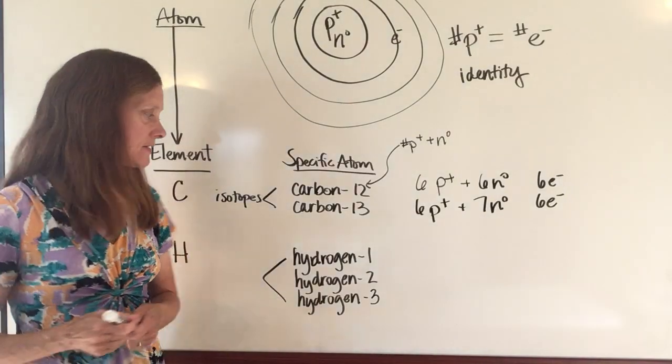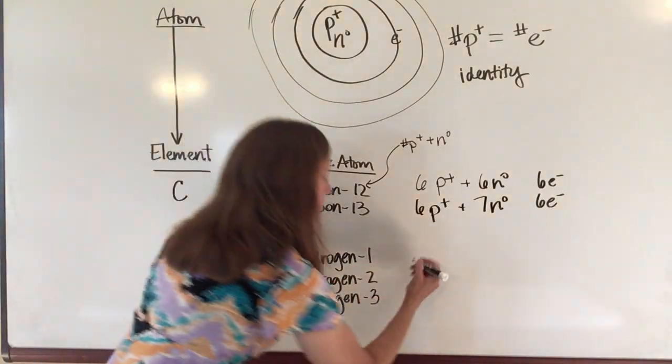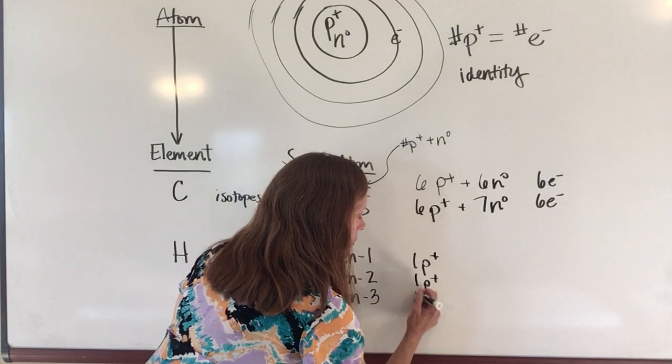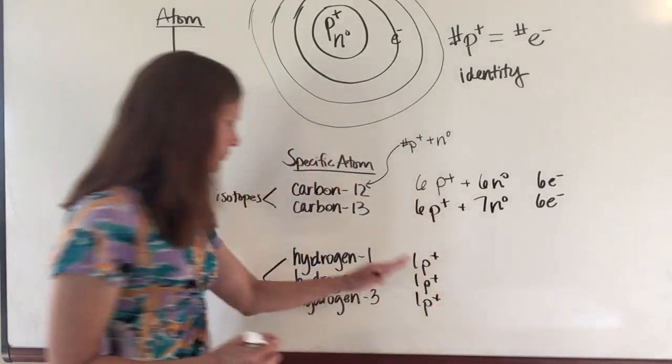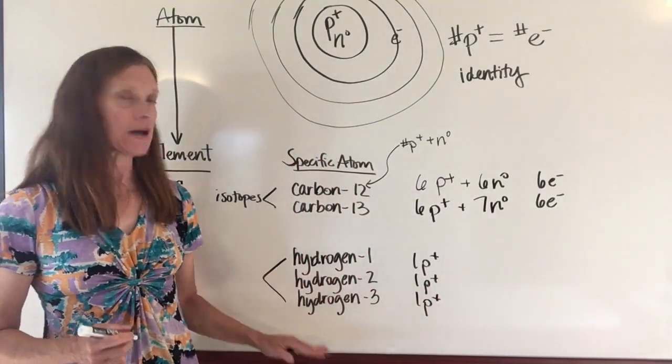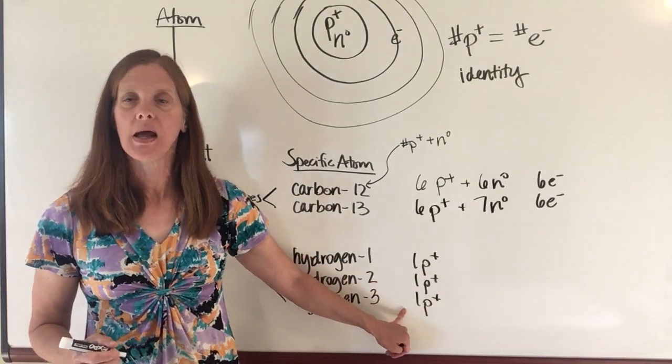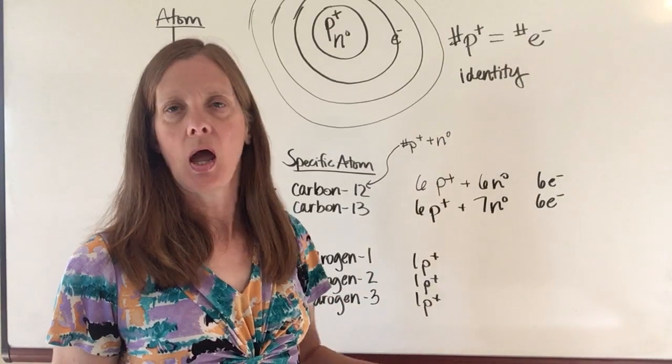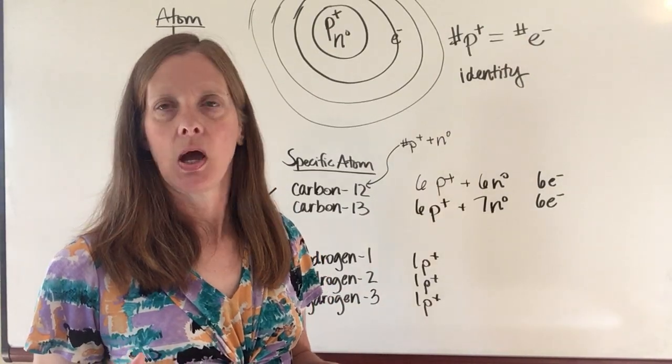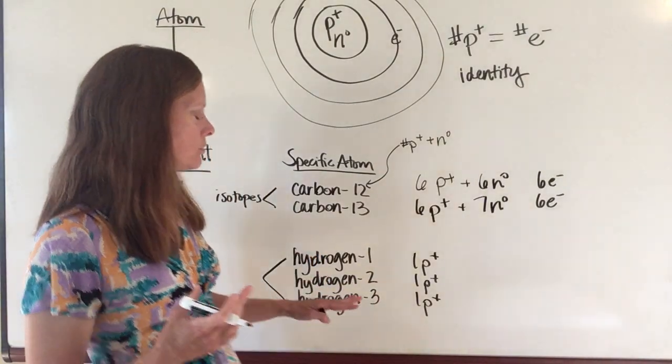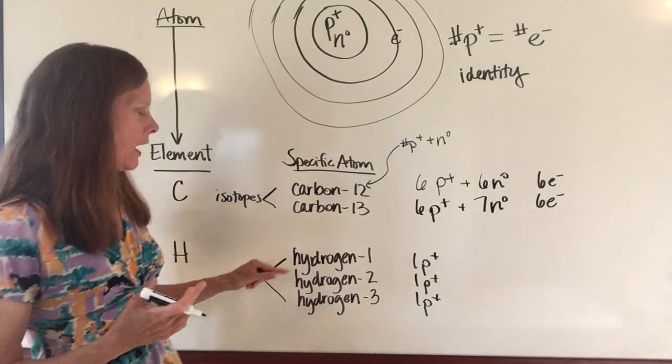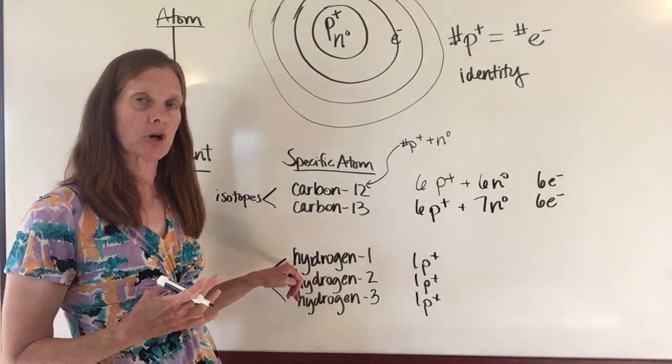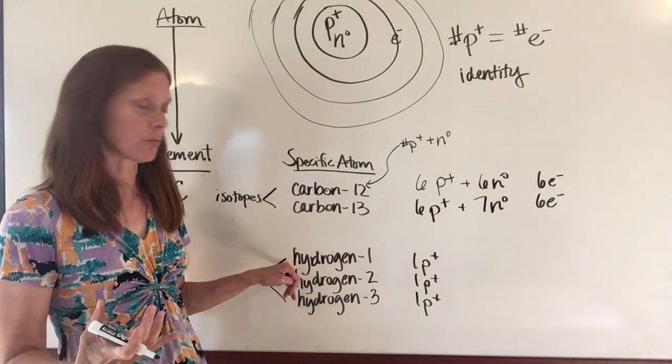Hydrogen—all hydrogen atoms are going to have one proton in them, so it doesn't matter what number comes after the name hydrogen, I know that each one of them is going to have one proton. At this point in the game, I don't expect you to know how to determine what the number of protons is. What I do want you to know, though, is if I tell you that you have a hydrogen atom and I tell you how many protons, you should be able to determine the number of neutrons.